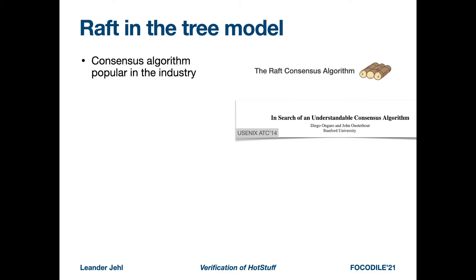So I was wondering if there are other algorithms in the tree model. There exists a recent proposal of fast HotStuff. But more interesting, the Raft algorithm can be cast in this model. Raft is a consensus algorithm popular in the industry. It was presented in 2014 as an understandable consensus algorithm. Different from HotStuff, Raft assumes that processes can only fail by crashing and will not misbehave or attack the system.